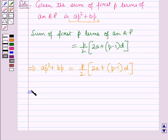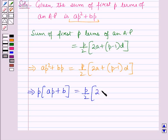Now this implies taking p common, within brackets it will be ap plus b equals p by 2 into 2a plus p minus 1 the whole into d.